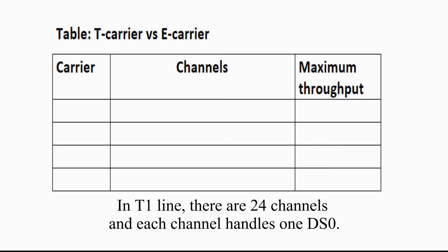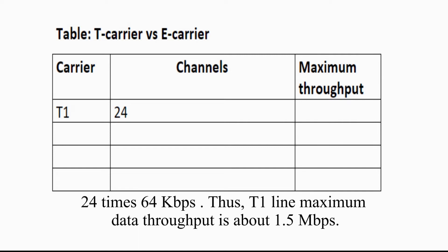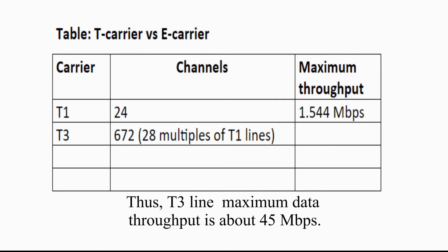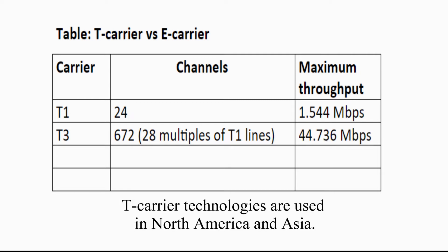Here is the table of four common types of T-carrier and E-carrier lines. In a T1 line, there are 24 channels, and each channel handles 1 DS0. 24 times 64 kbps means the T1 line maximum data throughput is about 1.5 Mbps. In a T3 line, there are 672 channels, or it consists of 28 T1 lines, giving a maximum data throughput of about 45 Mbps. T-carrier technologies are used in North America and Asia.